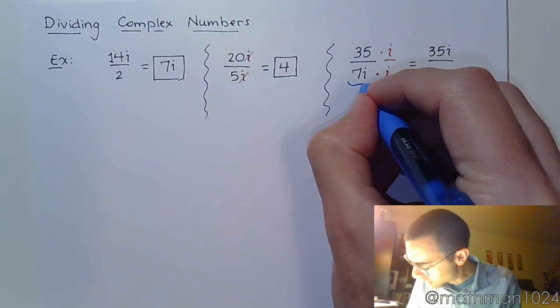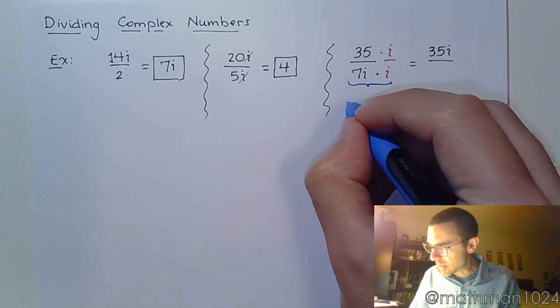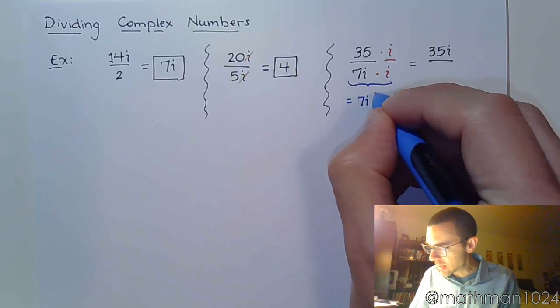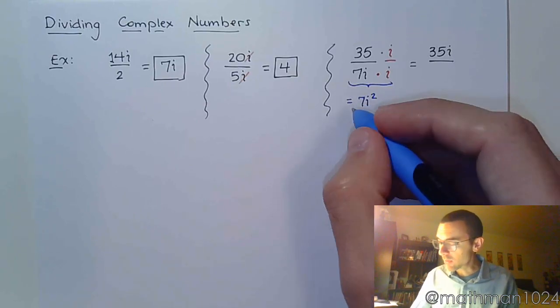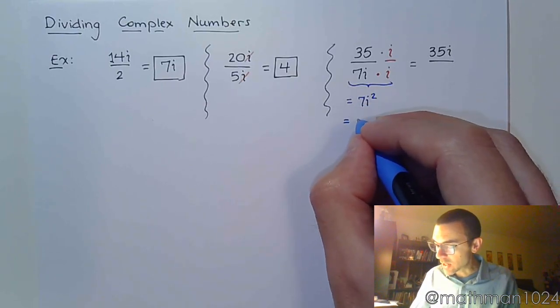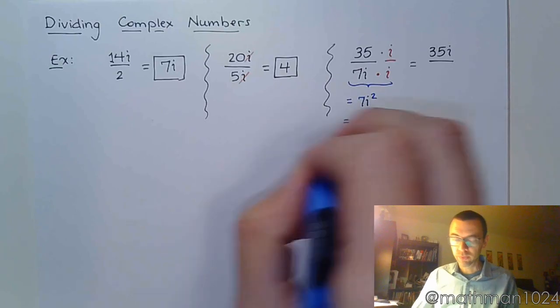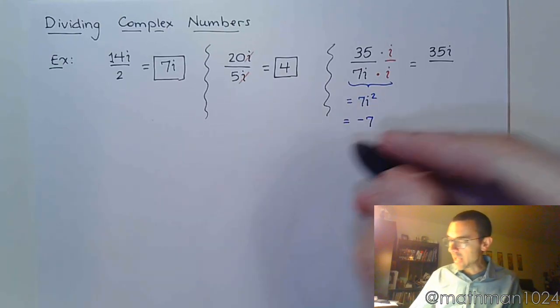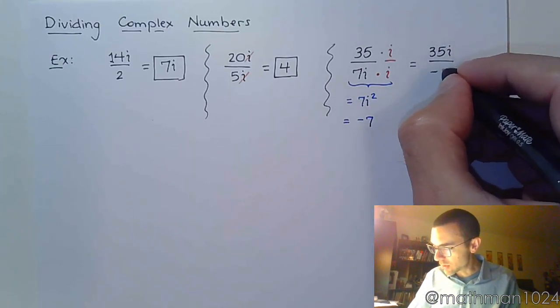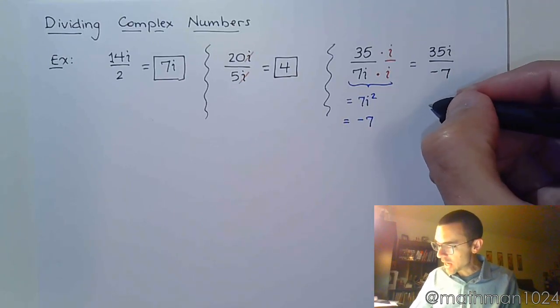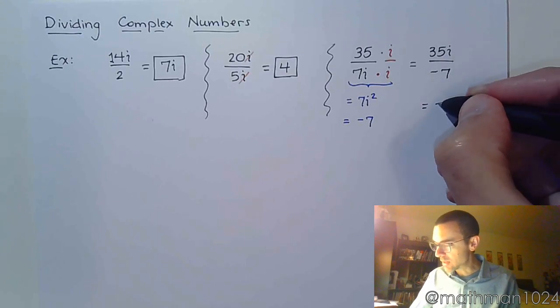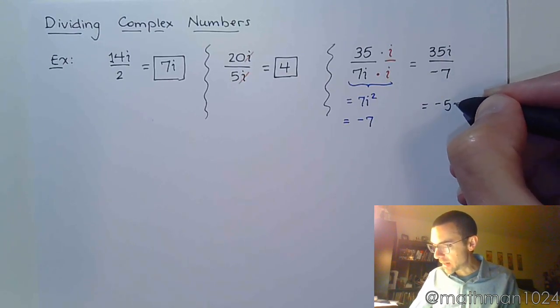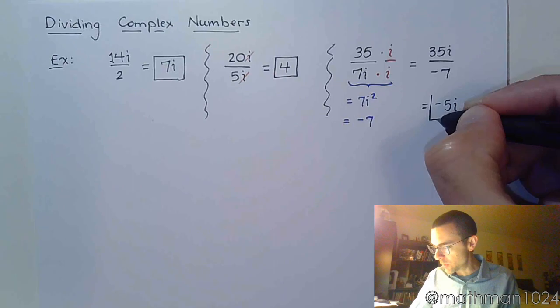In this denominator, 7i times i is 7i squared. And we just saw what happens when you have an i squared factor. That's going to change the sign here to make this negative 7. So, I really have 35i over negative 7. And now, I can finish this off. 35 divided by negative 7 is negative 5.